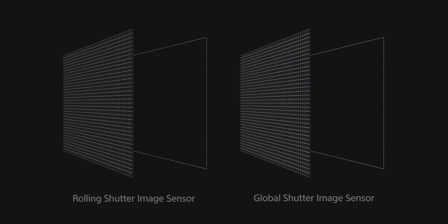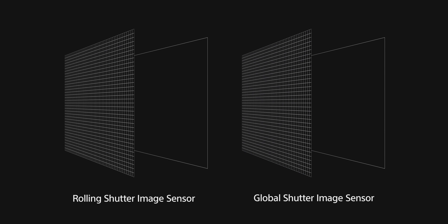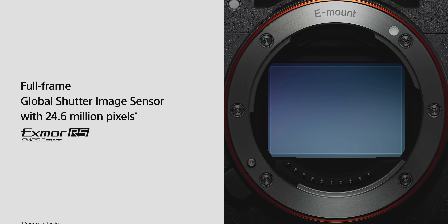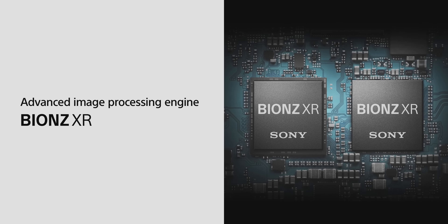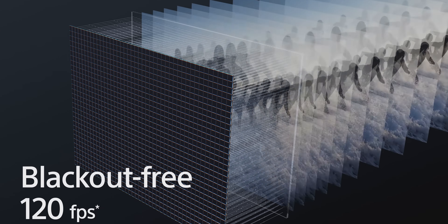The global shutter technology solves this by exposing all pixels simultaneously - all 100% of pixels capture the light at the same time. This eliminates shutter lag and rolling shutter distortion. In this camera, Sony provides a 24.6 megapixel sensor with the global shutter, meaning there is no shutter lag at all.